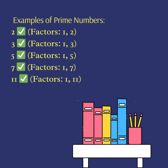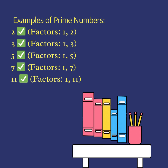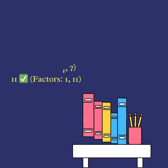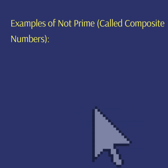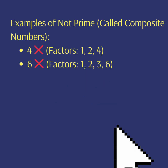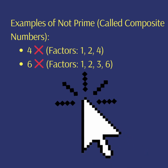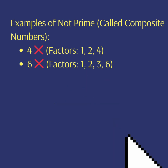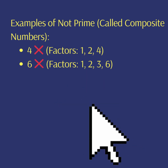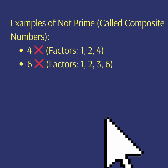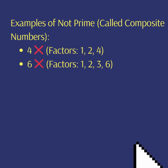Examples of numbers that are not prime are called composite numbers. For example, four has factors one, two, and four. Six has factors one, two, three, and six.